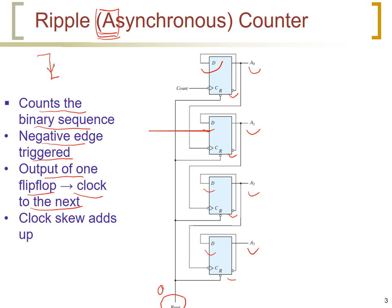Assume the counter is initially 0, 0, 0, 0. The complements are all 1, so the D inputs are all 1. When the count pulse goes from 1 to 0, the data is loaded into the first flip-flop and appears at the output as 1. When this 1 appears, the clock of the next flip-flop goes from 0 to 1, so nothing happens to the other flip-flops. Therefore, the count becomes 0, 0, 0, 1.